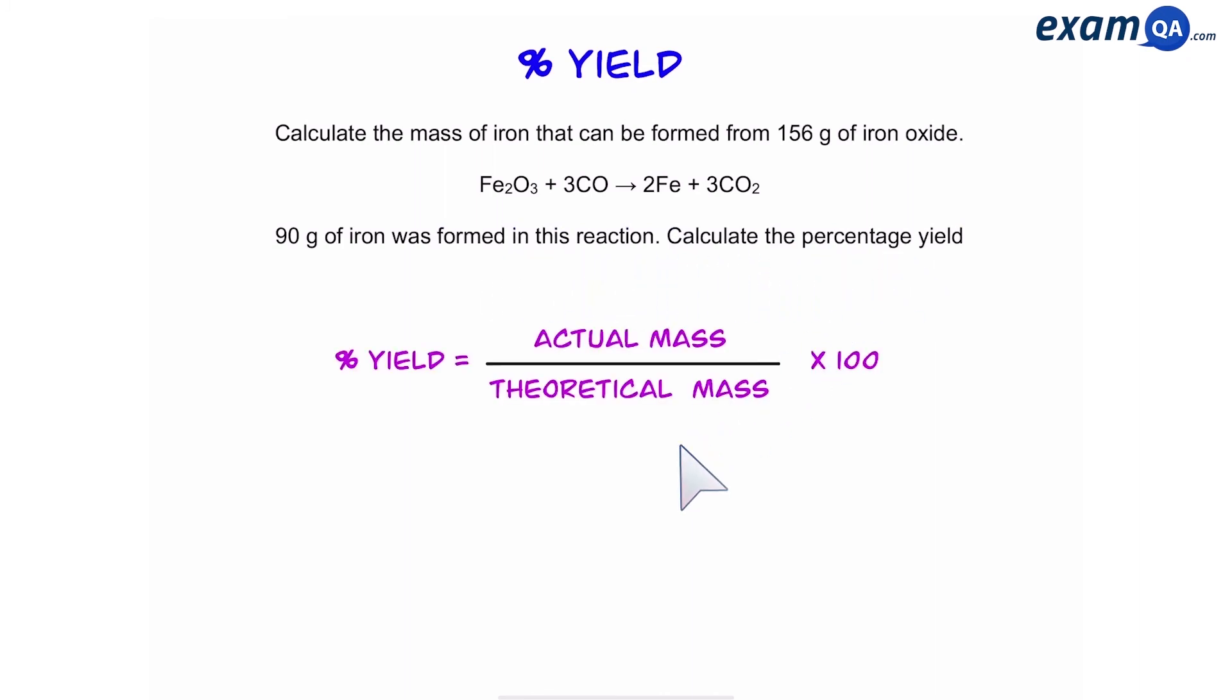So again, we're going to use our formula, actual mass divided by theoretical mass. We know that actual mass is what we get by doing the real experiment, so we actually got 90 grams. But we knew that we could have got 109.2, that's our theoretical mass. So we're going to do 90 divided by 109.2, times it by 100 because it's a percentage, and that gives you 82.4%. That is the yield for this reaction.